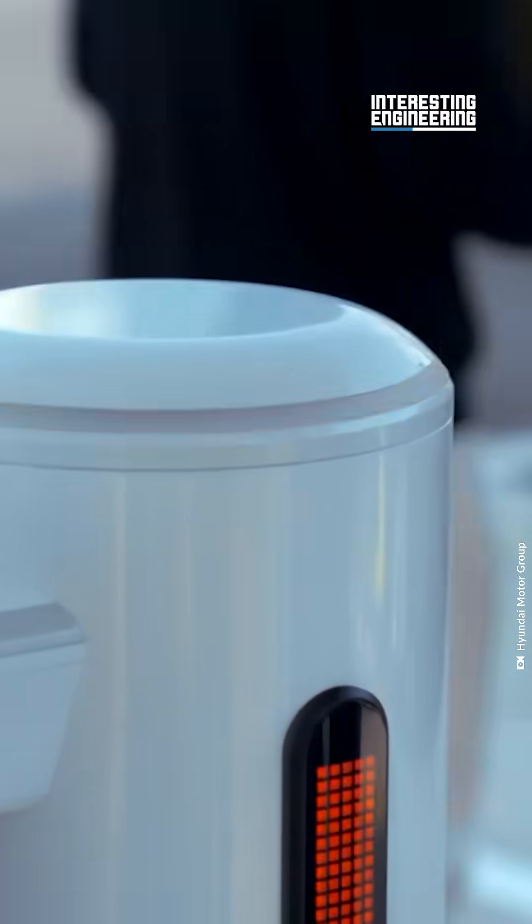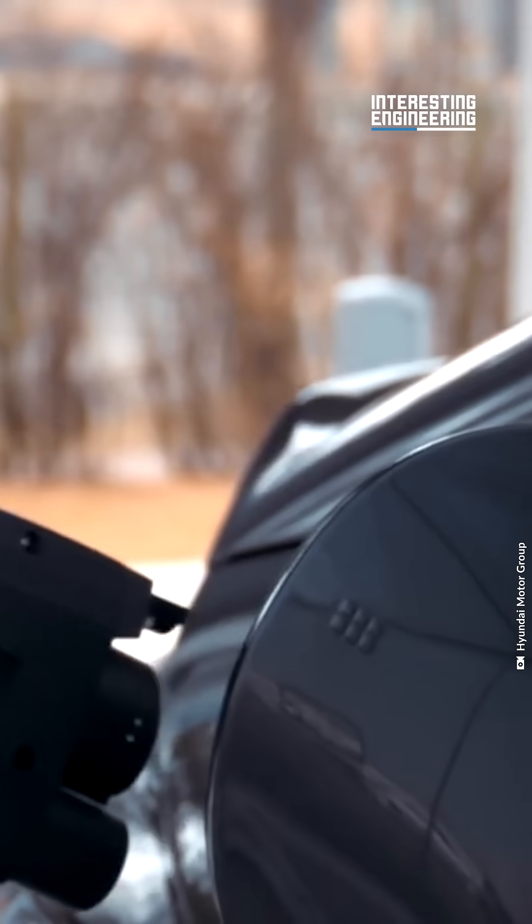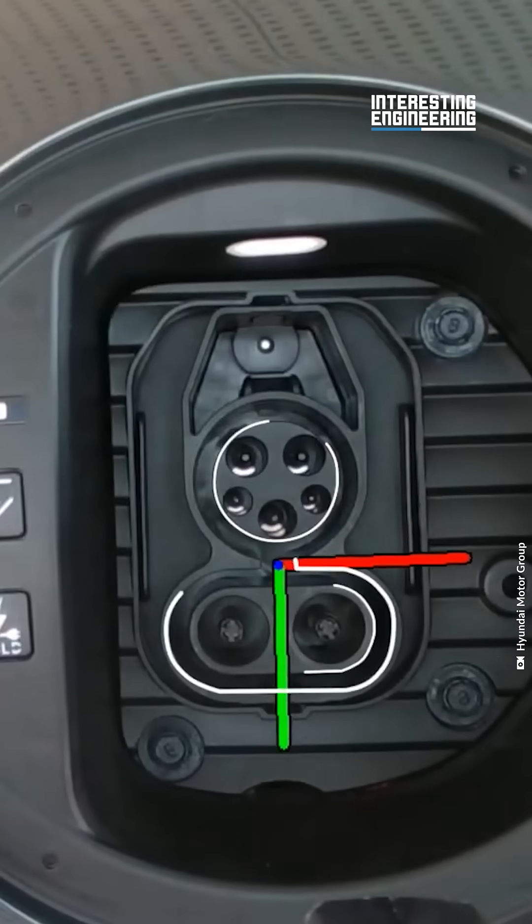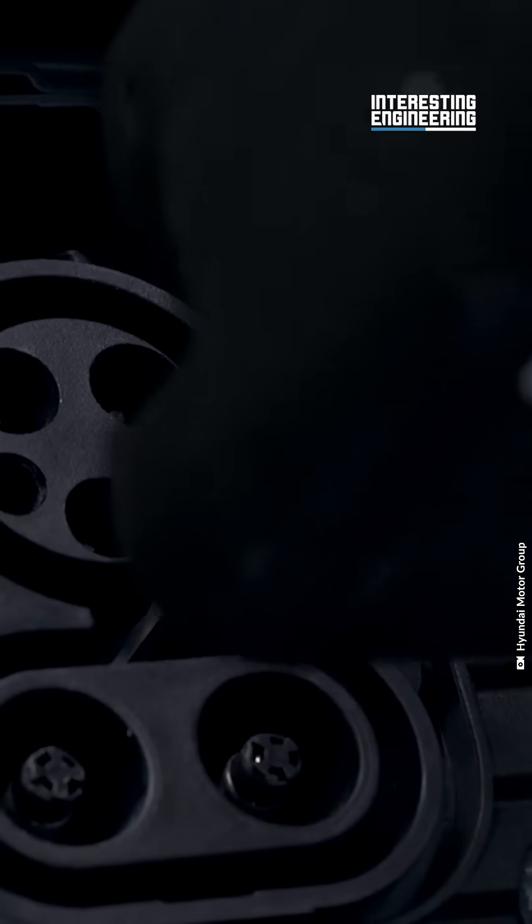The ACR works like this. Once a vehicle is parked and stationary, the ACR communicates with it to open the charging port. Using a built-in camera, the robot calculates the exact position and angle needed to connect the charger.